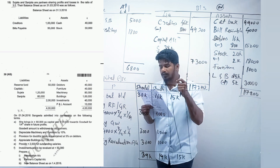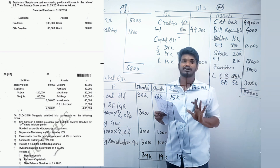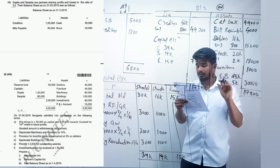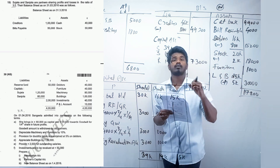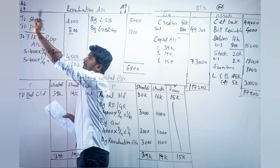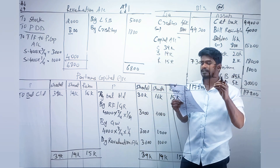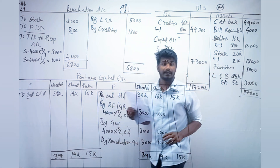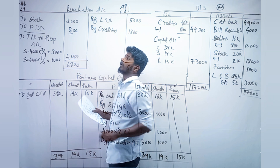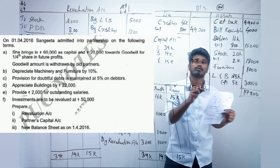To depreciate machinery and furniture, look at the balance sheet. Machinery is given as 80,000 and furniture is 40,000. Depreciation means the asset value is decreasing, so we record it on the debit side. For furniture: 40,000 × 10% = 4,000 on the debit side. For machinery: 80,000 × 10% = 8,000 on the debit side, because the asset is decreasing.